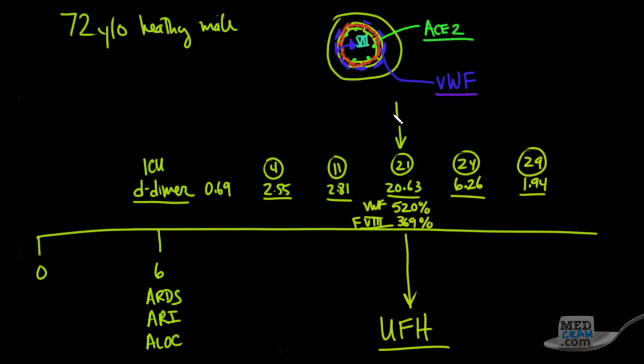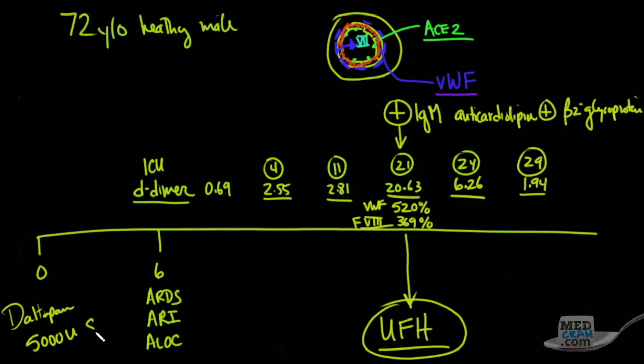The other thing that they noticed was they started noticing positive IgM antibodies for anti-cardiolipin antibody and also positive for anti-beta-2 glycoprotein, even though the IgGs were negative, indicating an acute antibody. Now it's interesting to note that they switched to unfractionated heparin. When the patient was first admitted, the patient was started on a prophylactic dose of daltaparin at around 5,000 units sub-q daily. So it seems as though these blood clots may be mediated by very high levels of von Willebrand's factor and even factor VIII in the coagulation cascade.